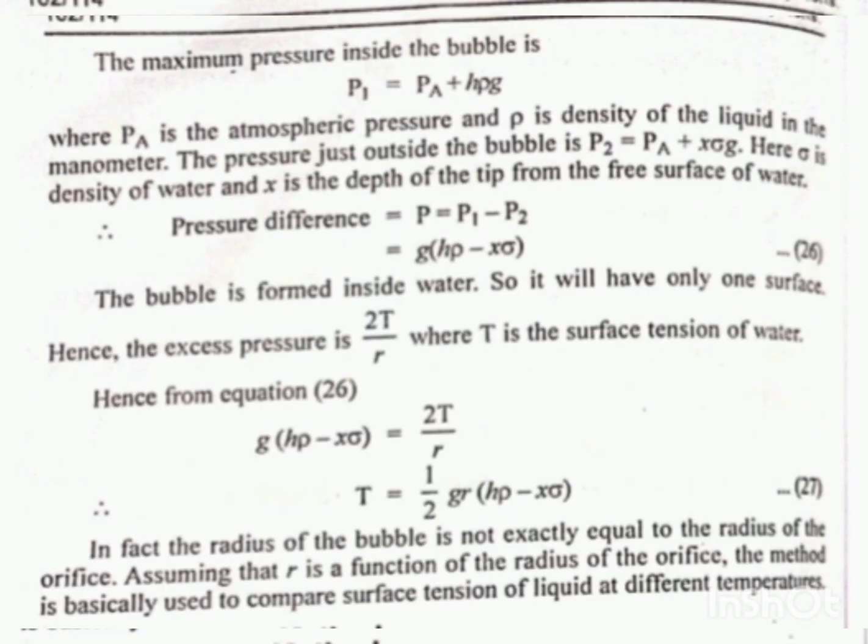The maximum pressure inside the bubble is given by P1 equals Pa plus H rho g, where Pa is the atmospheric pressure and rho is the density of the liquid in the manometer.